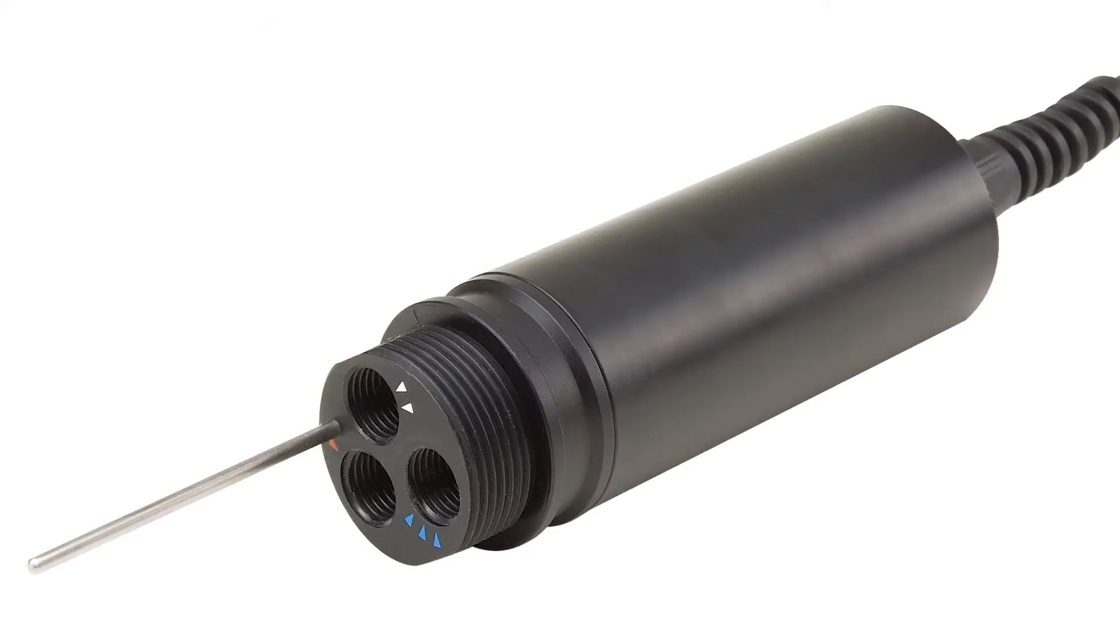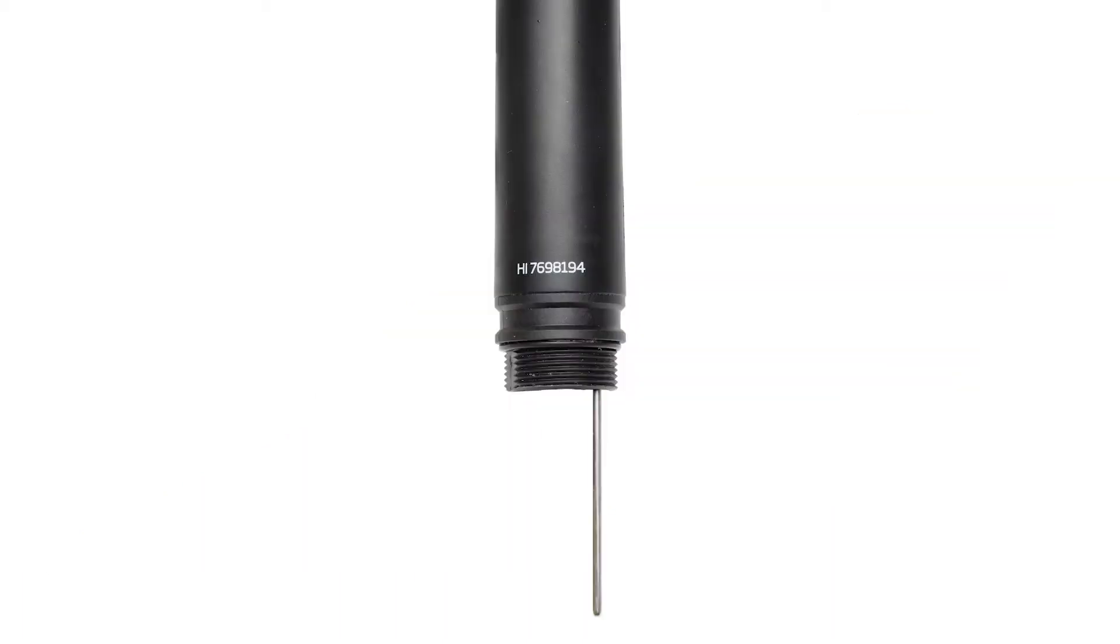These probes have two or three sensor connector sockets identified with color-coded triangles. Connector 1 can be a pH or pHORP sensor. Connector 2 is for the dissolved oxygen sensor. Connector 3 is for the EC sensor.